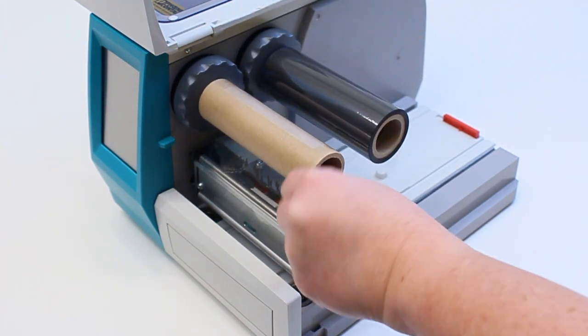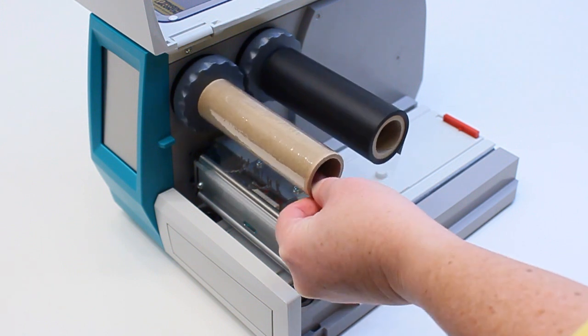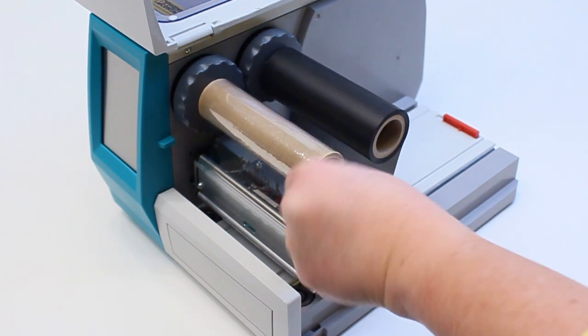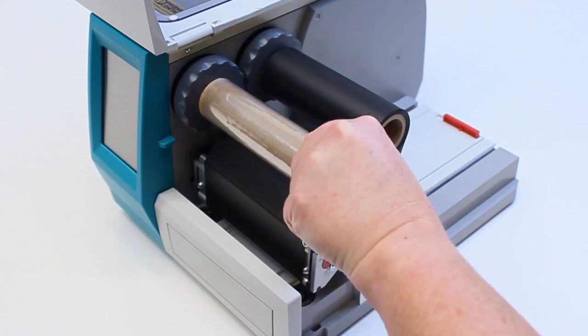Rotate the front take-up core counterclockwise until the clear plastic can no longer be seen and the ribbon is tight with no wrinkles.